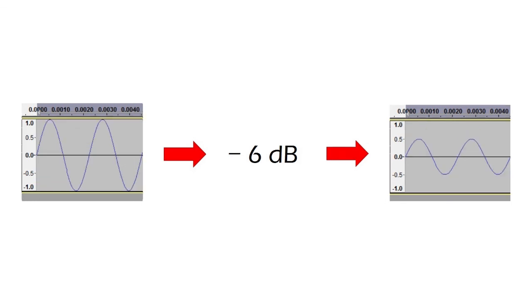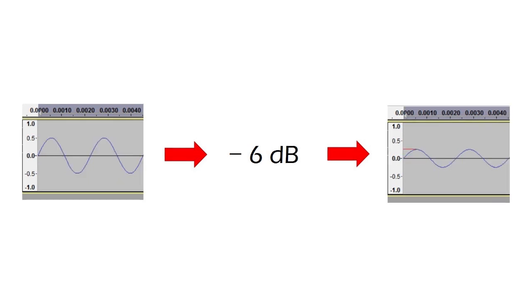In the same way, if we subtract 6 decibels, we reduce its amplitude by half, returning it to an amplitude of 0.5. And subtracting an additional 6 decibels again halves its amplitude, this time leaving it with an amplitude of 0.25. This is why each consecutive attenuation seems to have less effect on the wave, even though we are always subtracting the same amount of decibels.